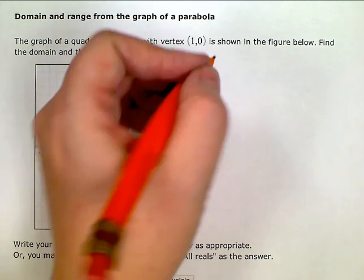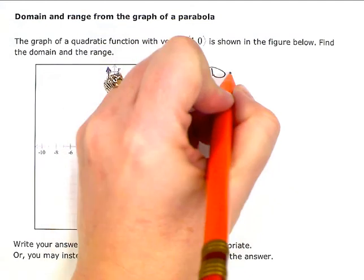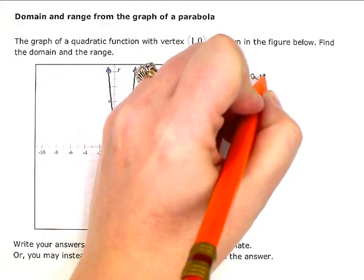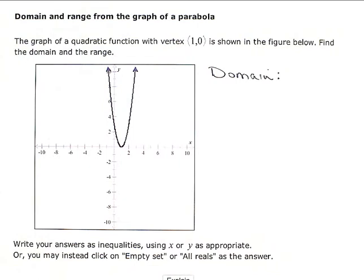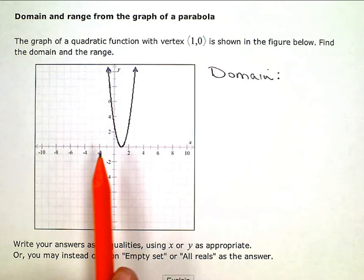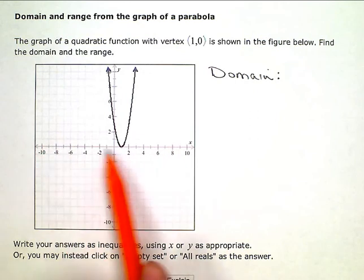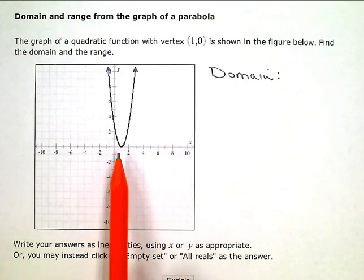So first we're going to talk about the domain. Now the domain is all the possible x values of this function. So I'm looking along the x-axis here. And I just think to myself, because I'm going to name the domain, I'm going to start looking for a value over here in the negative direction.